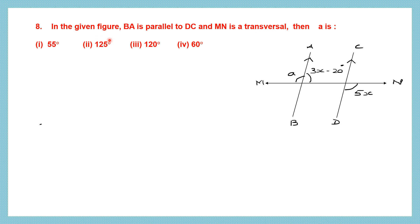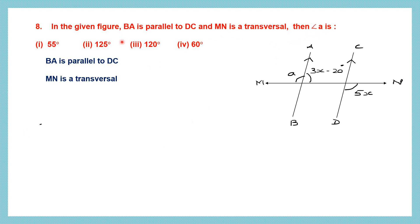Question 8. In the given figure, BA is parallel to DC and MN is the transversal cutting these two parallel lines. We are asked to find angle A. Now if we take angle A and 3X minus 20, they are on a straight line — a linear pair adding to 180. But we have two unknowns, X and A, so we cannot use that directly.